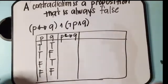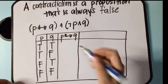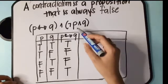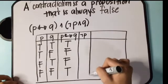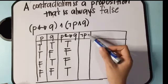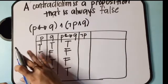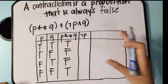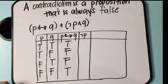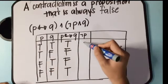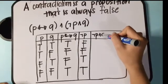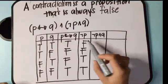Using the truth table for biconditional: if both propositions are either true or false, the truth value is true; the rest are false. So we get true, true, false, false. Then let's have the negation of P. If you're more comfortable, you don't need to draw a separate column for negation of P — but let's write it. Negation of true is false, false, then true, true.